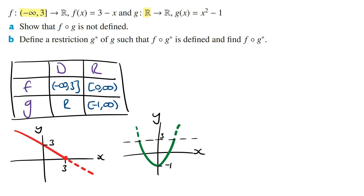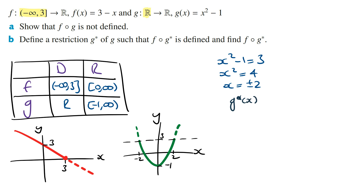Letting the function g equal to 3 and solving for x, we get x squared minus 1 equals 3. Solving for x, x squared equals 4 and x equals plus or minus 2. This means if we define the function g star of x with the rule x squared minus 1 and restricted domain from minus 2 to 2, then its range will be from minus 1 to 3, making the composite function f of g star defined.